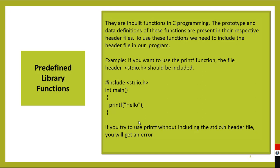Now, how to implement predefined library functions in C programming. We can implement predefined functions with header files. The first header file is #include stdio.h, which is the standard input/output header file. This header file contains the definitions of functions that perform input/output operations such as scanf, printf, gets, and puts. Printf prints data onto the screen. If you want to use the printf function, then the file stdio.h must be included. If you try to use printf without including the stdio.h header file, you will get an error.